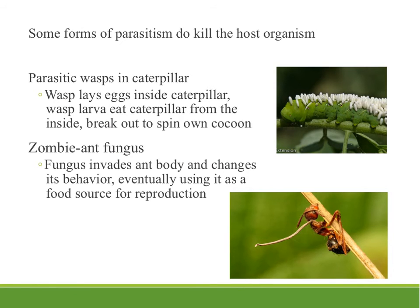Some forms of parasitism do kill the host organism. Parasitic wasps lay their eggs inside caterpillars. The eggs hatch and the wasp larvae eat the caterpillar from the inside out, then break out to spin their own cocoons before developing into adults. If you've ever seen a caterpillar with white capsules on it, it is probably on its last legs — it is providing nutrition for the parasitic wasp.